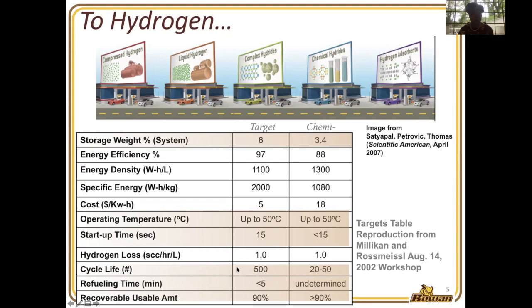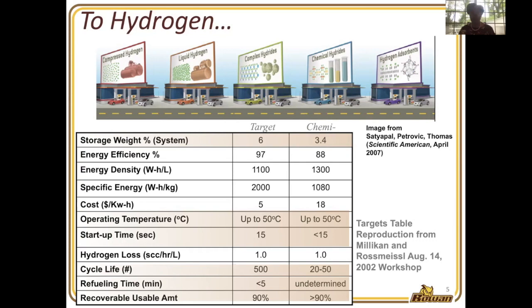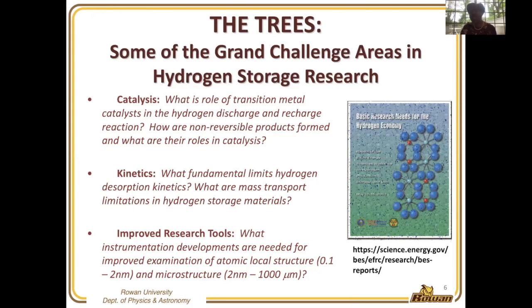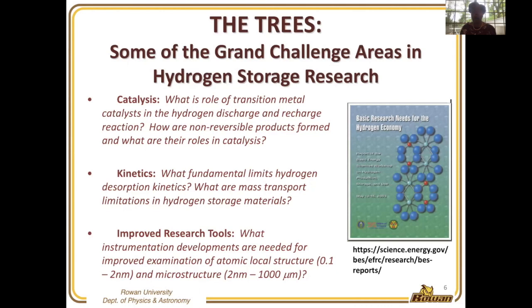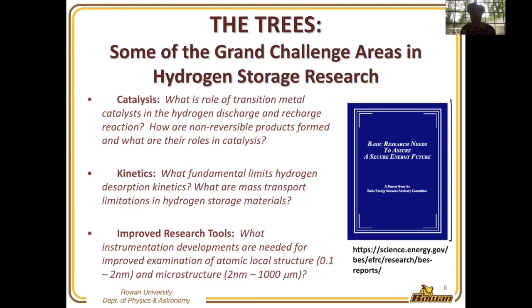The cycle life determines the kinetics and thermodynamics—the temperature and pressure at which hydrogen goes back onto the material, and then the temperature at which it's released. These parameters are really defined by the fundamentals of the material, and that's why we want to undertake neutron scattering studies to understand things like the role of the transition metal catalyst, and whether the limitations we're seeing are kinetic limitations or whether we're transitioning into a new thermodynamic reaction pathway. Most importantly, what new information can we bring using tools at neutron and synchrotron facilities?